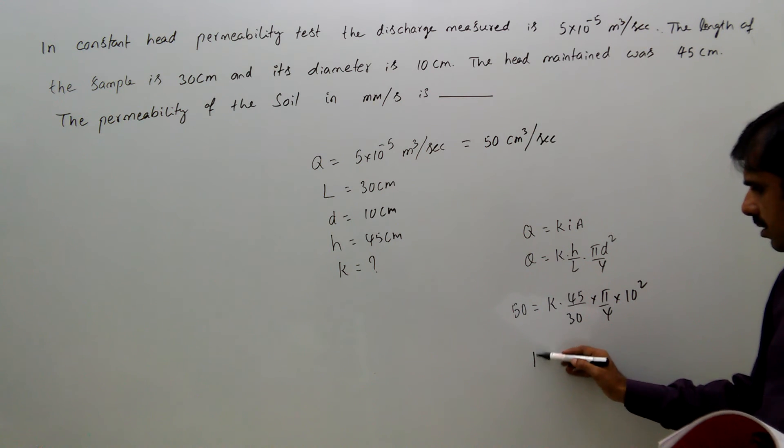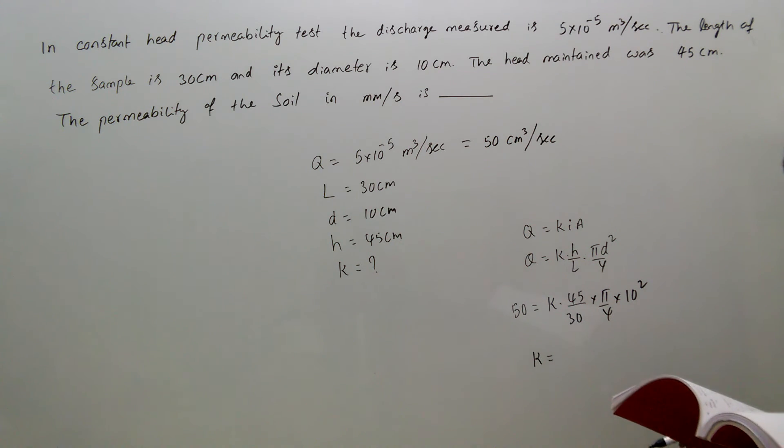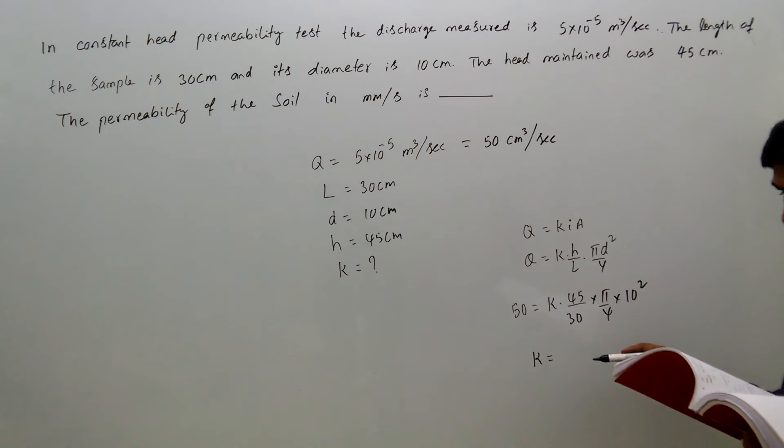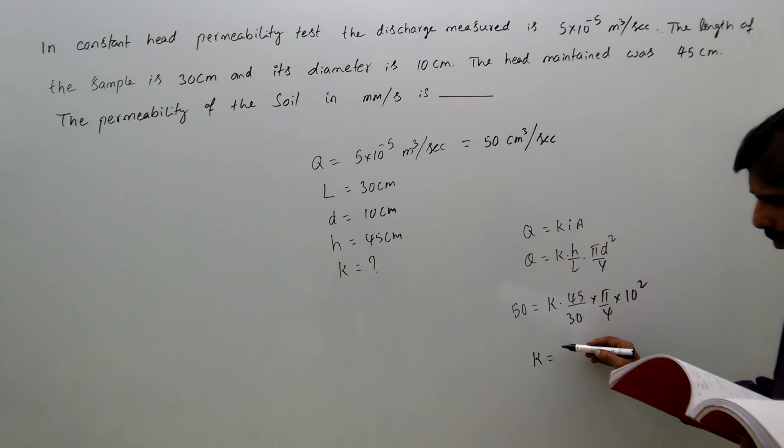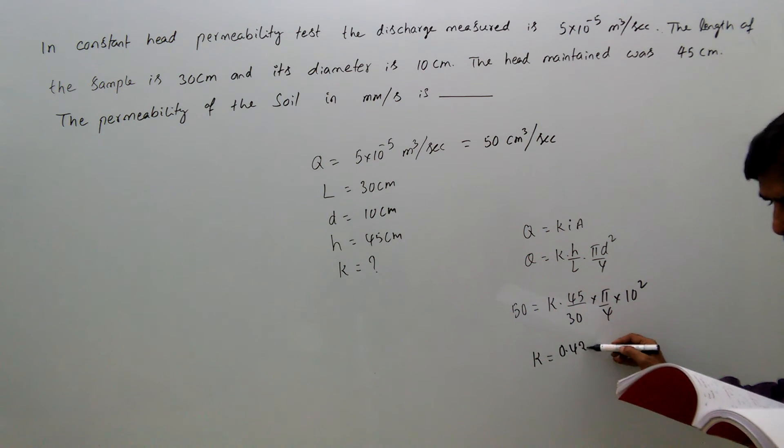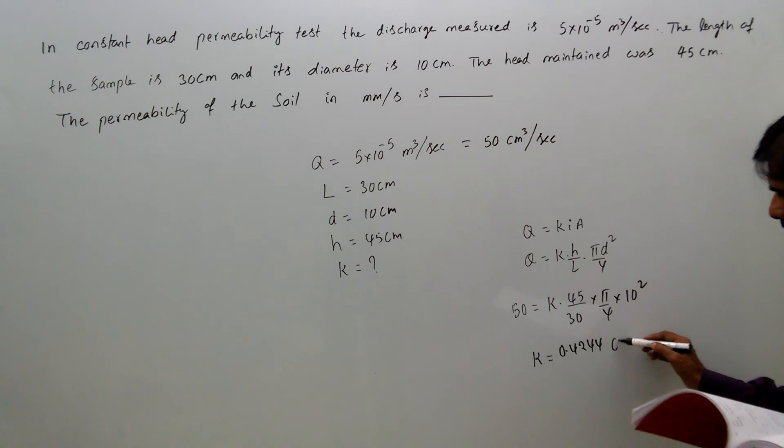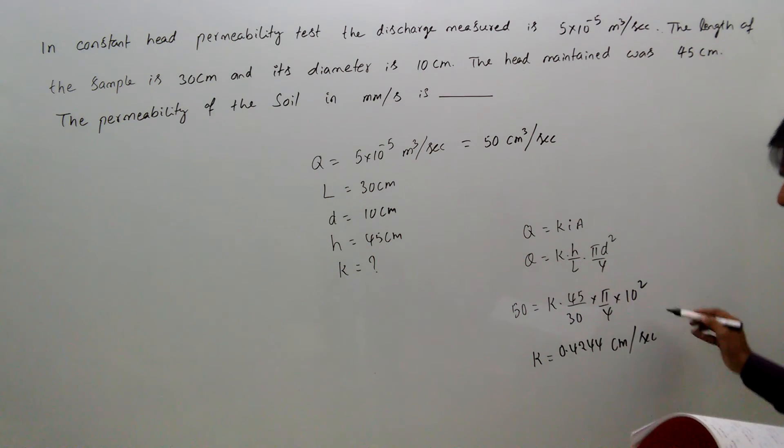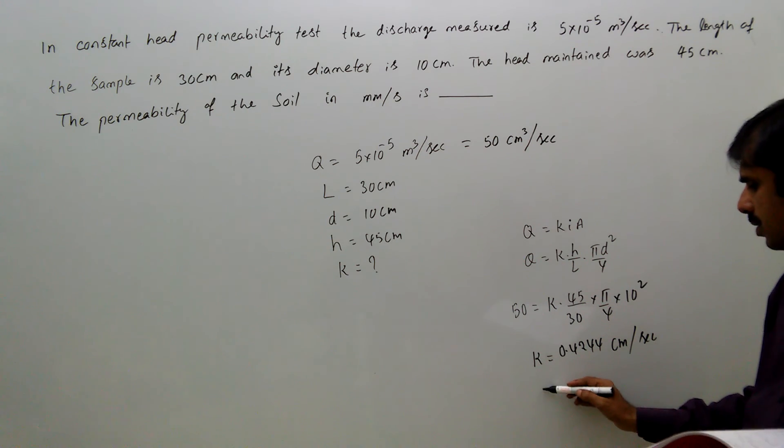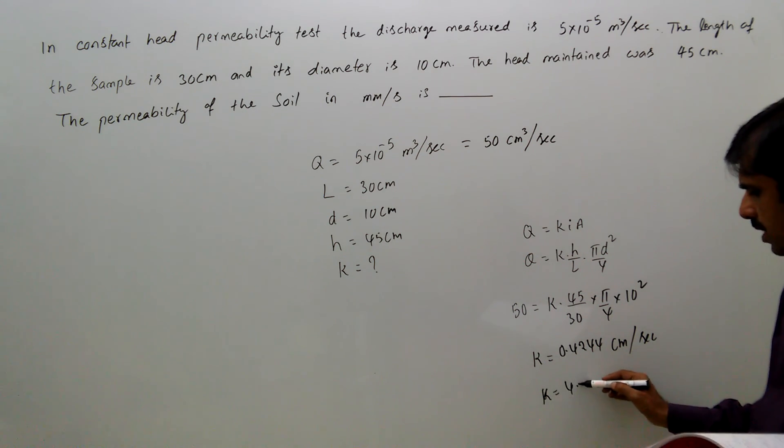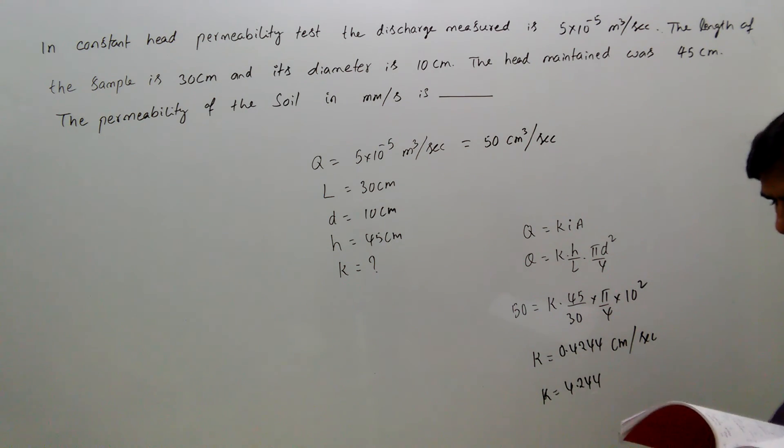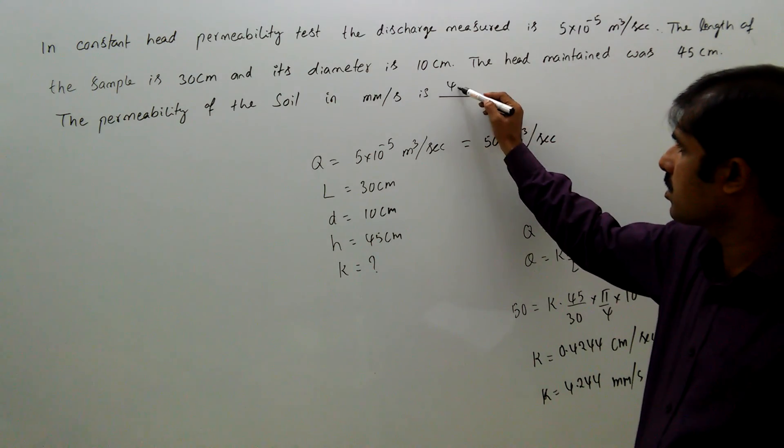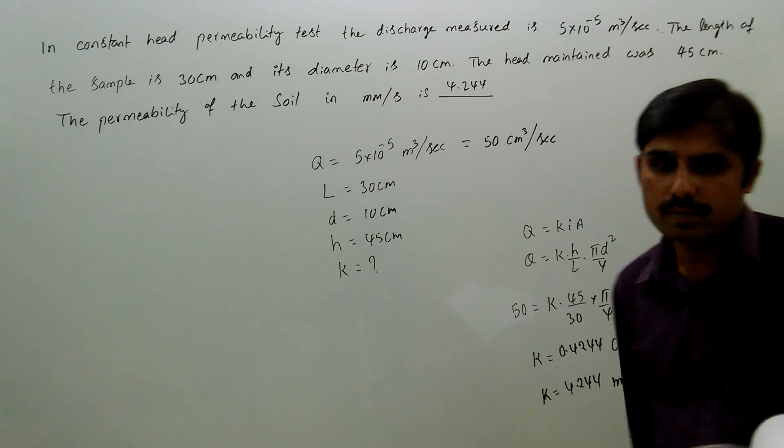Solving this, k = 0.4244 cm/s, but we need mm/s, that is 4.244 mm/s.